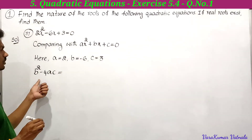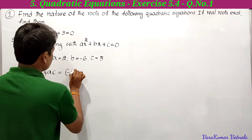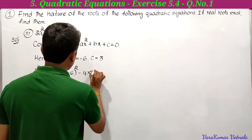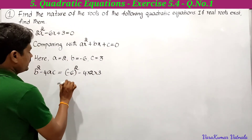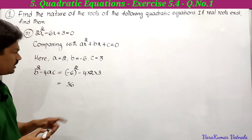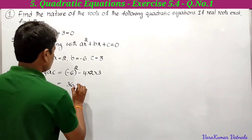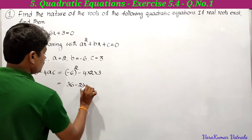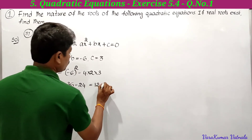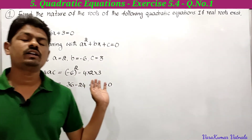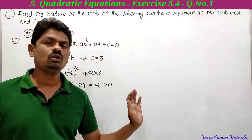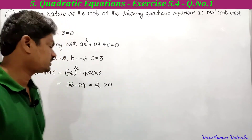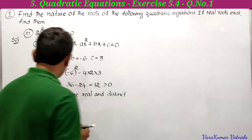Finding b²-4ac: (-6)² - 4(2)(3) = 36 - 24 = 12. Since b²-4ac = 12, which is greater than 0, the roots are real and distinct.